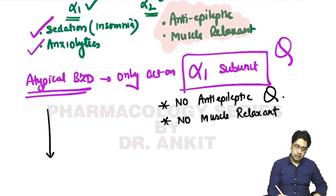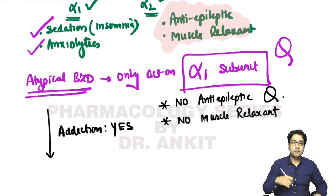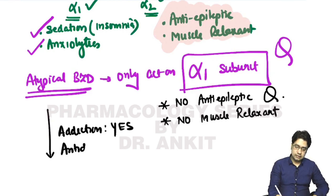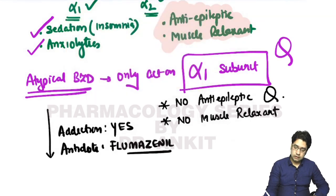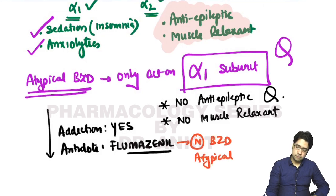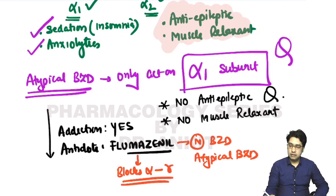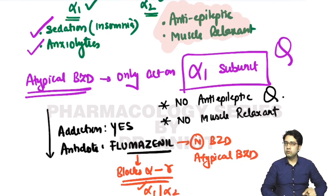Atypical benzodiazepines are addictive substances. If poisoning occurs, the antidote is flumazenil — the same antidote as for normal benzodiazepines — because flumazenil blocks all types of alpha-gamma subunits, blocking both alpha-1 and alpha-2.